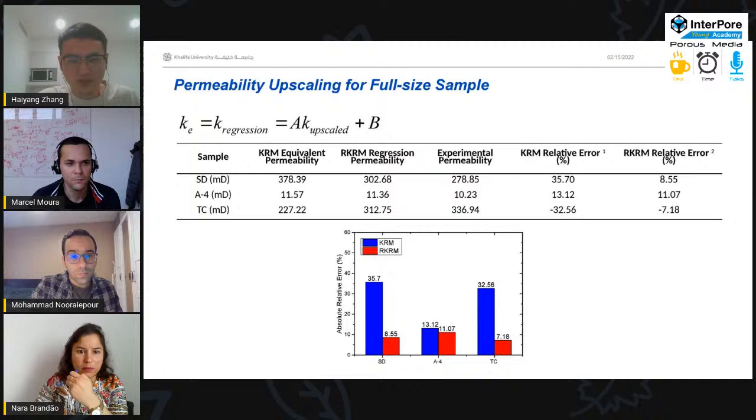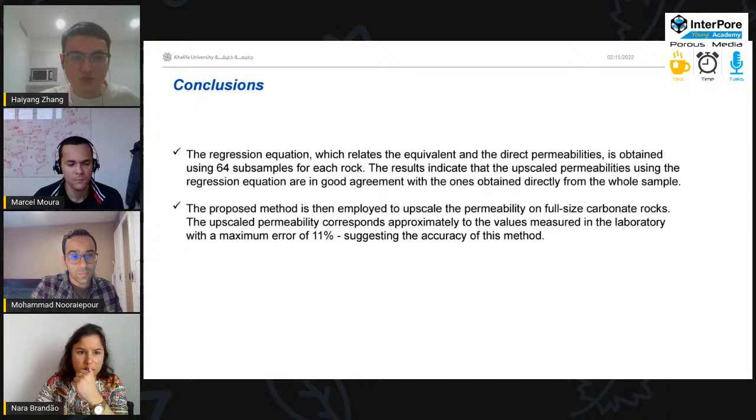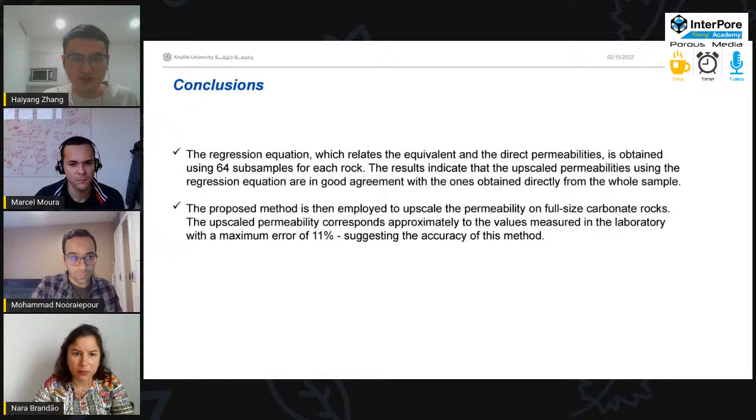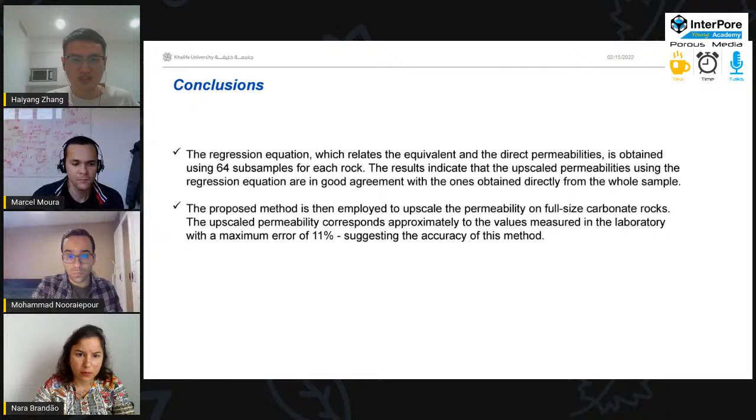There is an increase on the estimation accuracy. Finally, is the conclusion. The regression equation, which relates to the equivalent and the direct permeability, is obtained using the 64 subsamples for each rock. The results indicate that the upscaled permeability using the regression equation are in good agreement with the ones obtained directly from the whole sample. And the proposed method is then employed to upscale the permeability on full-size carbonate rocks. The upscaled permeability corresponds approximately to the values measured in the laboratory, with a maximum error of 11%. This suggests the accuracy of this method. That's all. Thank you. Thanks for listening.